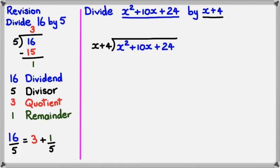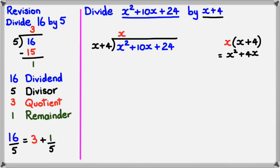So, as you can see, the first term in the blue part is x squared. So, I need to multiply x by something to get x squared, and the obvious choice here would be x, because if I do x multiplied by x plus 4, I'm going to get x squared plus 4x. I'd write it up like this — x squared plus 4x.